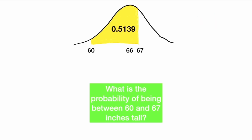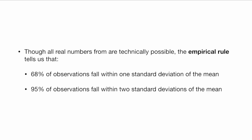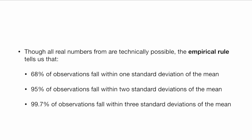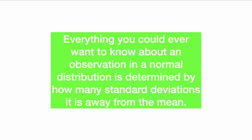We were able to draw an analogy between the distribution of height and the distribution of z-scores to find that the probability of being between 60 and 67 inches is 51.39%. So though all real numbers are technically possible, the empirical rule tells us that 68% of observations fall within one standard deviation of the mean, 95% fall within two standard deviations, and 99.7% fall within three standard deviations. These are z-scores — how many standard deviations you are from the mean. Everything you could ever want to know about an observation in a normal distribution is determined by its z-score, and we can draw an analogy from any normal distribution to a standard normal distribution.